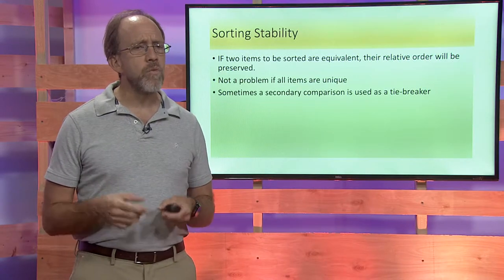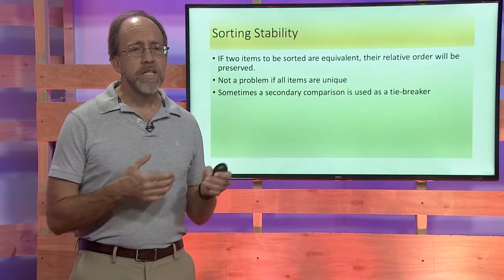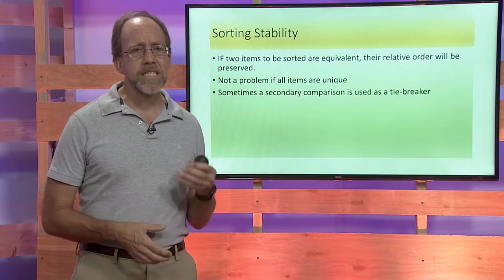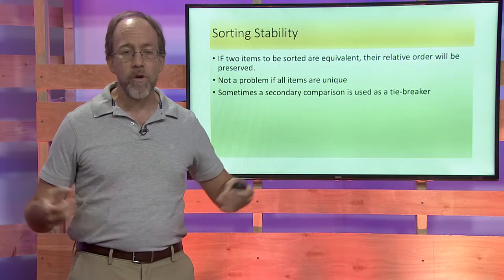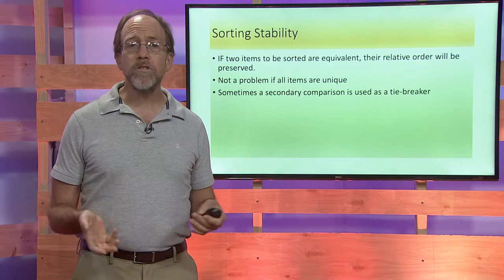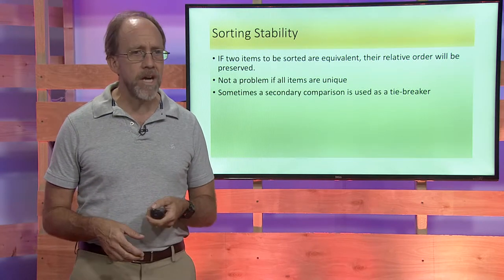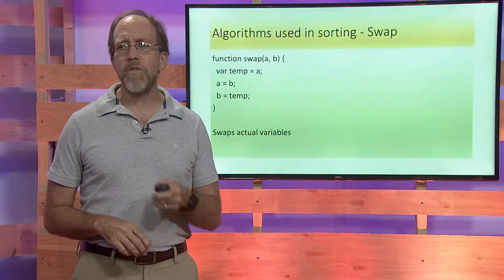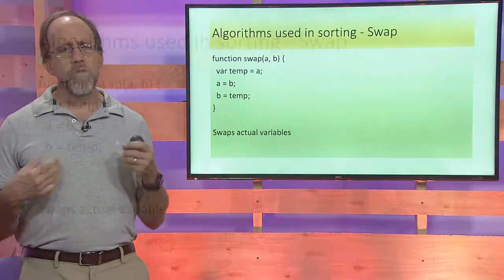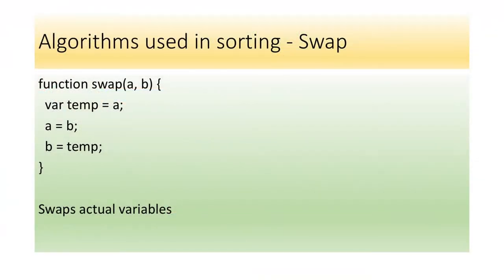In the situation where you do actually have to deal with some sort of object that has the same comparison operator as the other one or the same object, then you can always use some sort of secondary comparison as a tiebreaker too. So there are ways to deal with this. The most fundamental piece of the sorting is the swap.